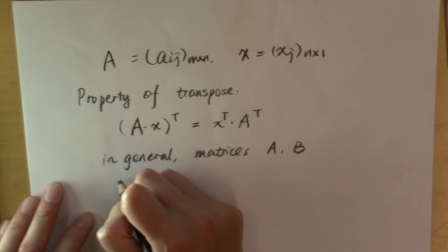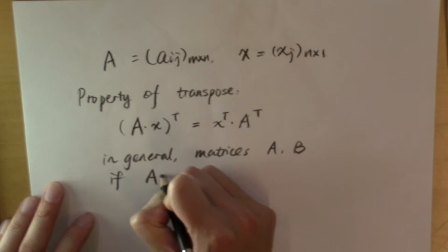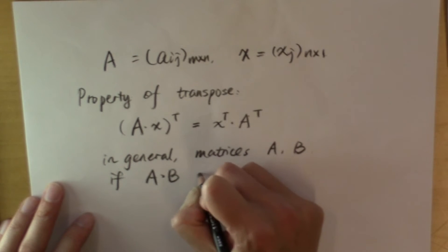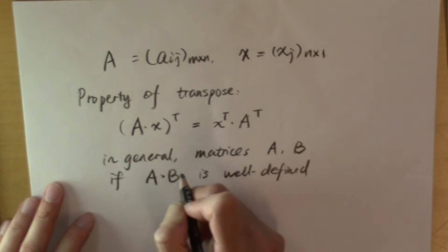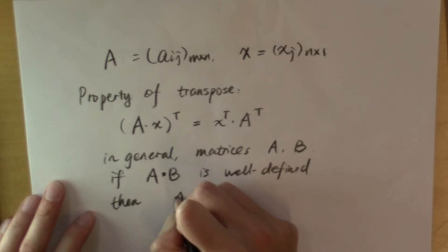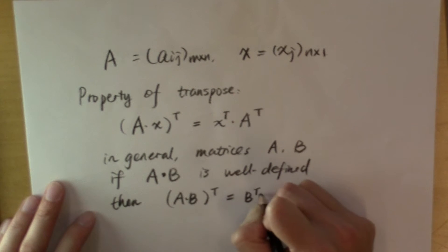and if A times B is well defined, meaning the dimensions work out for the multiplication, then the transpose of A times B is going to be B transpose times A transpose.